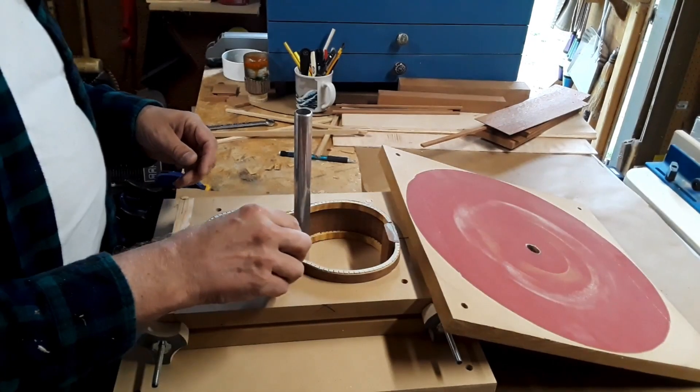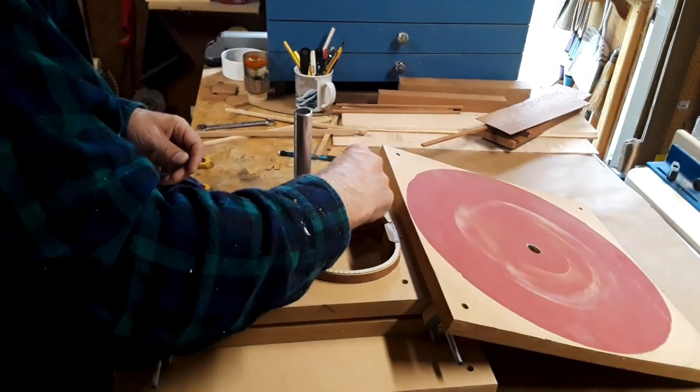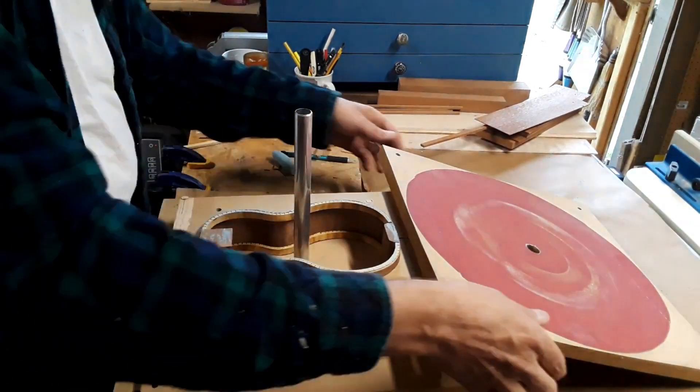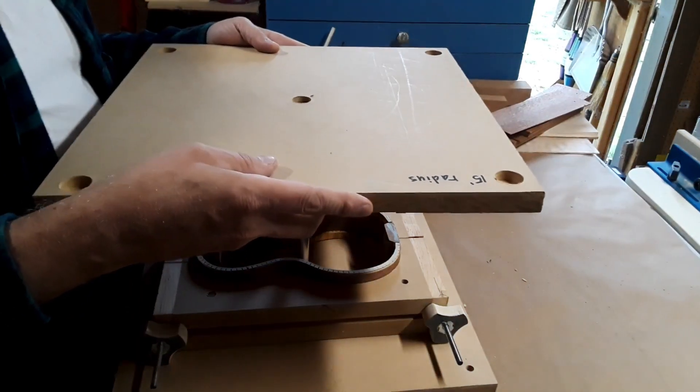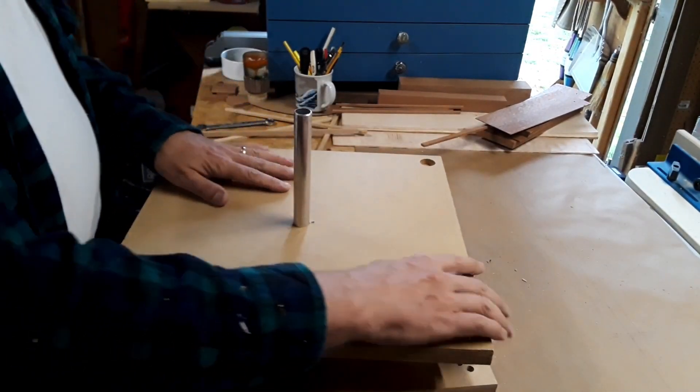What you're looking at here is a common way to clean up and or radius the edges of the sides of, in this case, the soprano ukulele that I'm making. Chalk mark the edges, sand them down, rinse and repeat.